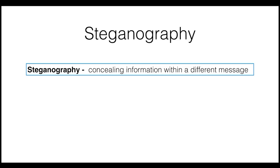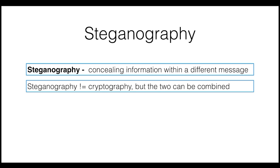Let's look at another example of data exfiltration: steganography. Steganography is defined in general as the practice of concealing information within a different message. In cybersecurity, this could mean hiding information inside a file, image, or video. Steganography is different from cryptography because cryptography aims at hiding the meaning of the message, while steganography hides the message itself.